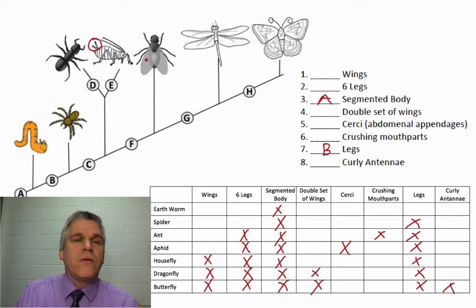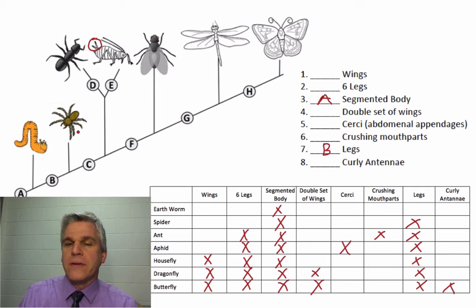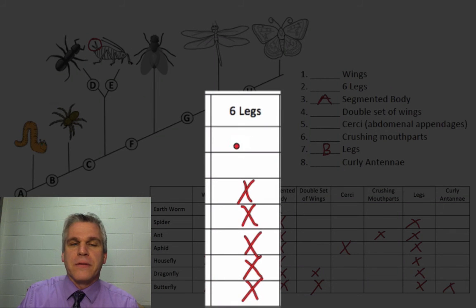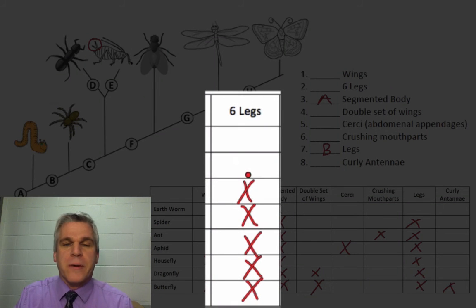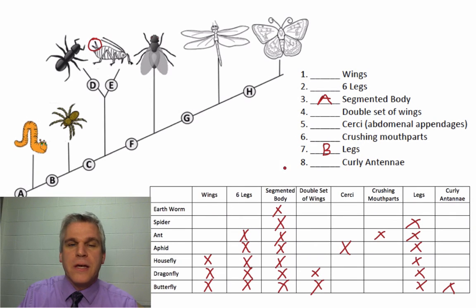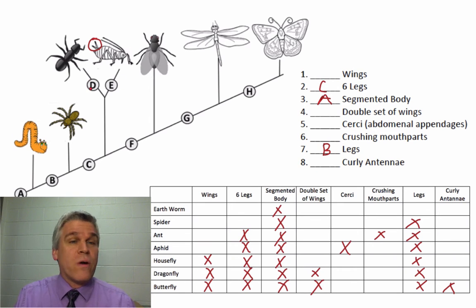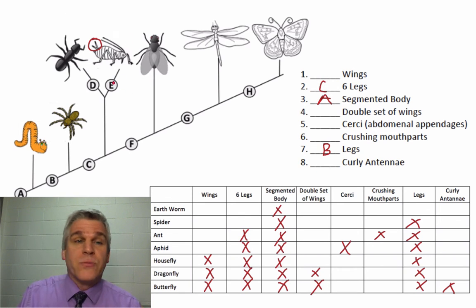Then, what do all these other animals have in common that the spider and the earthworm don't? The earthworm and the spider don't have six legs — everything else does. So C is going to be six legs. Now, here we have a branch off of one of our clads, which certainly can happen in a cladogram.